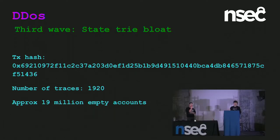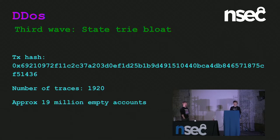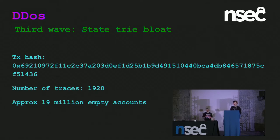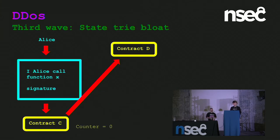Another example transaction had almost 2,000 traces. Unlike some blockchains, Ethereum has world state, which contains contract code, storage used by contracts, and accounts. What the attacker was doing here was creating almost 19 million empty accounts. It created and destroyed many contracts, taking advantage of idiosyncrasies and oversights in the Ethereum protocol. It bloated the state tries such that it couldn't be held in cache, making disk retrievals necessary — and they were slow.